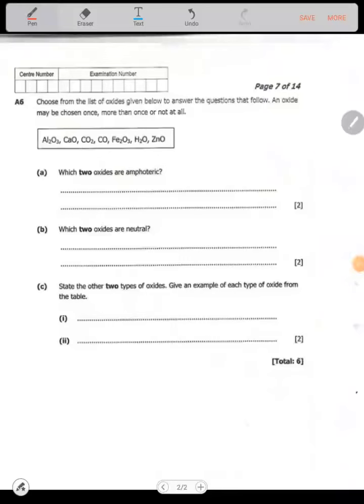Okay, the question says choose from the list of oxides given below to answer the questions that follow. An oxide may be chosen once, more than once, or not at all. We have iron oxide, calcium oxide, carbon dioxide, carbon monoxide, iron(II) oxide, aluminum oxide, water, and zinc oxide.